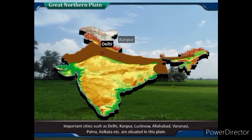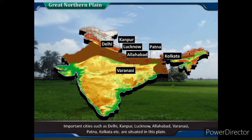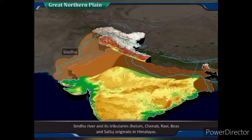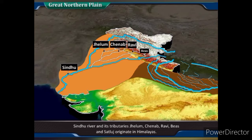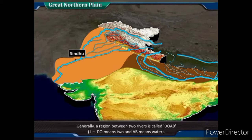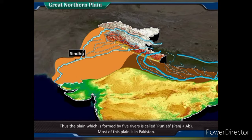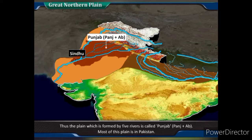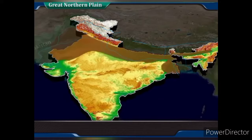This plain is considered the most prosperous region of India. Important cities such as Delhi, Kanpur, Lucknow, Allahabad, Varanasi, Patna, Kolkata, etc. are situated in this plain. The Sindhu river and its tributaries — Jhelam, Chenab, Ravi, Beas and Satlaj — originate in the Himalayas. A region between two rivers is called Doab (Do = two, Ab = water). The plain formed by five rivers is called Punjab (Panj + Ab). Most of this plain is in Pakistan.